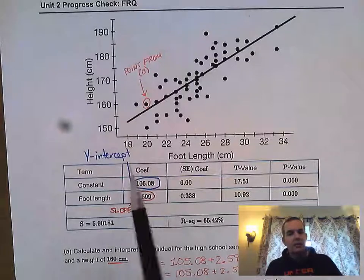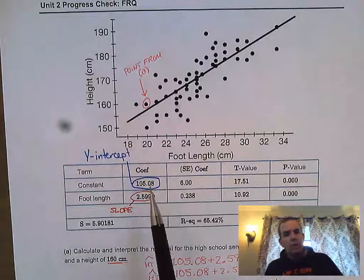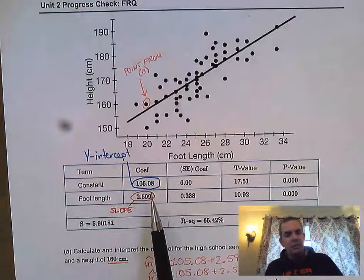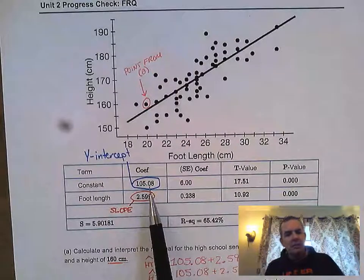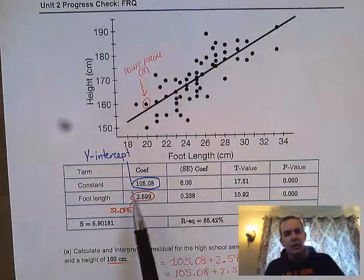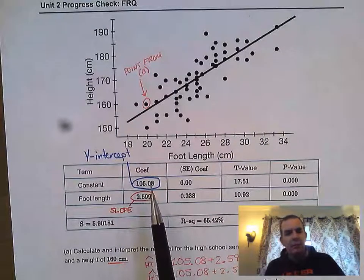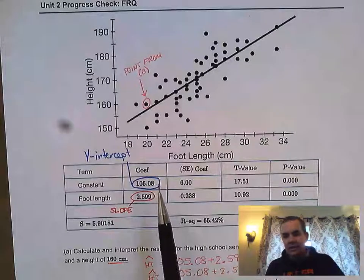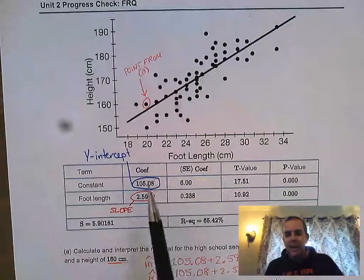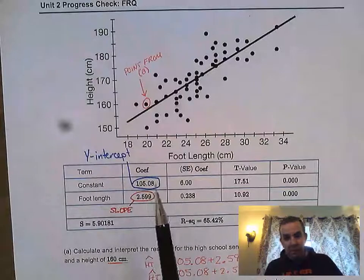This is saying someone with a zero centimeter foot length would have a height of 105.08 centimeters, which is kind of silly. Someone without a foot would be 105 centimeters tall—not realistic because we'd be extrapolating there.